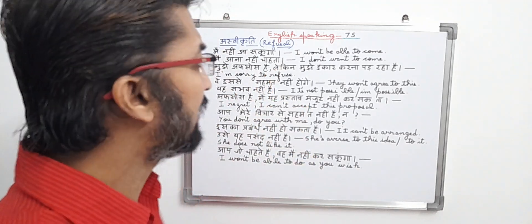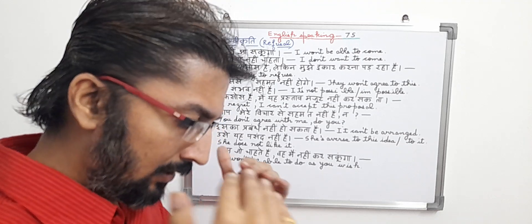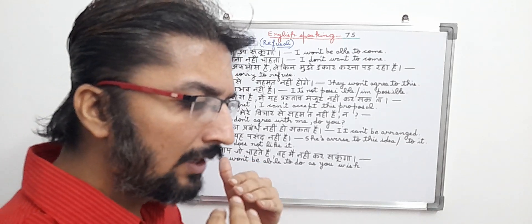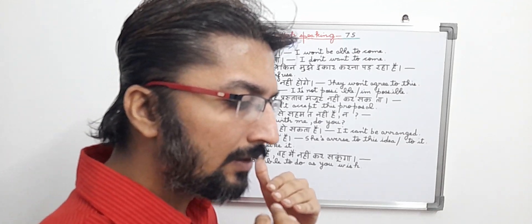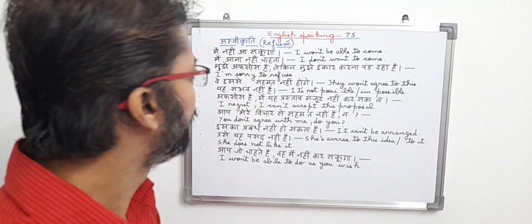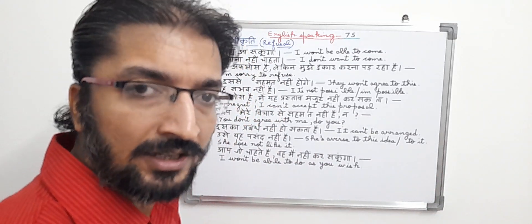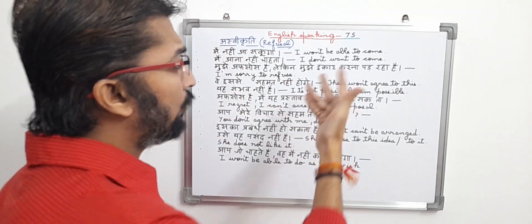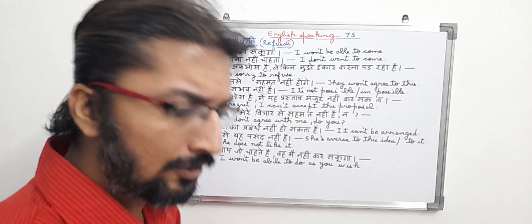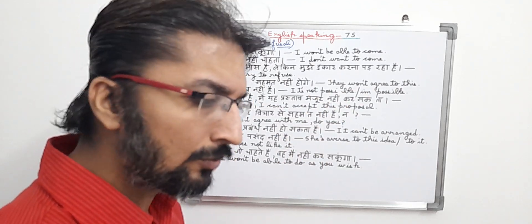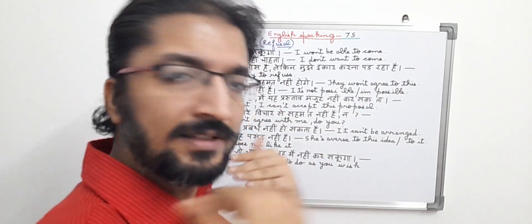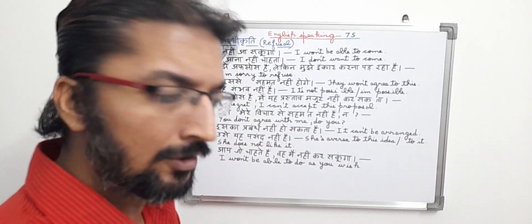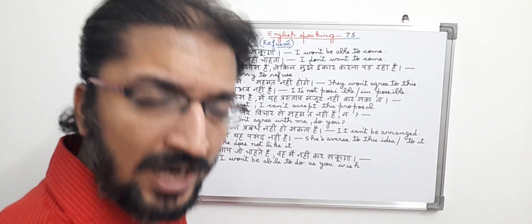In English, it means: I don't want to come. The sentence basically means the person is not willing to go to another place — he's not interested in going there. So he's clearly saying I don't want to come, refusing to go somewhere. It is a refusal type sentence.